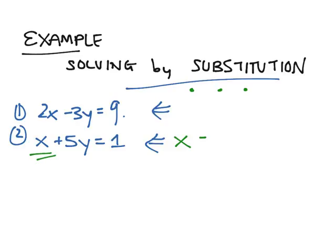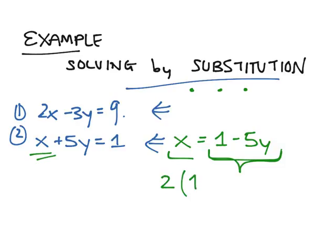x is equal to 1 minus 5y, so we've got x in terms of y. Now we plug this in for x in our first equation. So that would be 2x minus 3y is equal to 9, which becomes 2 times (1 minus 5y) minus 3y is equal to 9. This gives you an equation in terms of a single variable, which you can now solve using algebra.